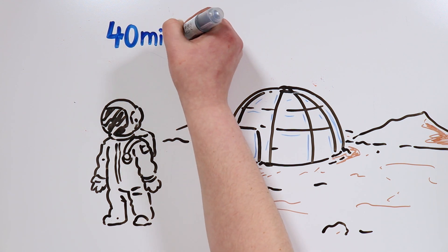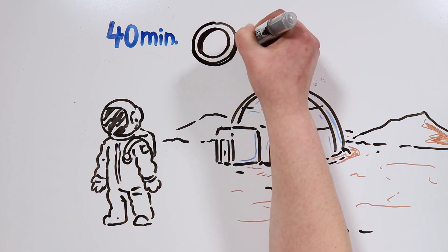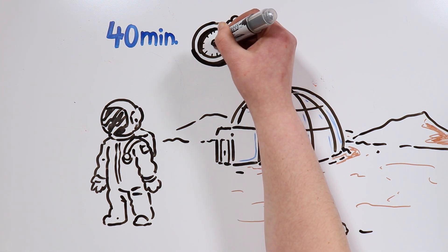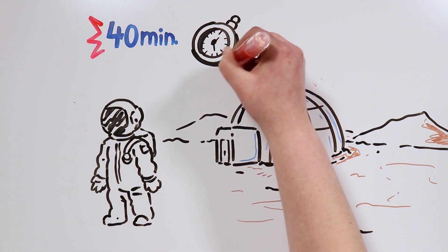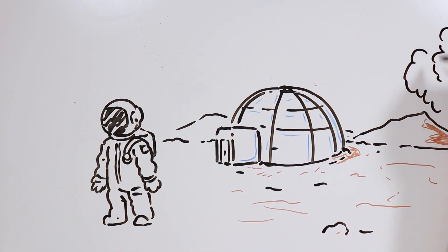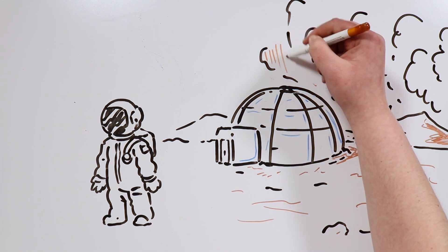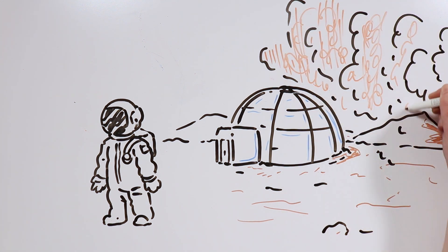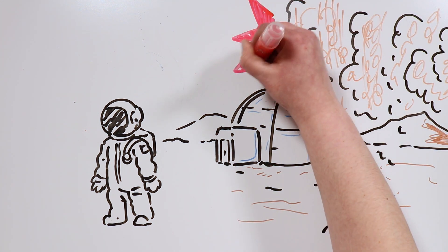One day on Mars lasts 40 minutes longer than on Earth, so a year would be a lot longer compared to what we are used to. And we haven't mentioned yet the terrible sandstorms, which can destroy our electronic devices and wound us pretty badly, tiktakers.